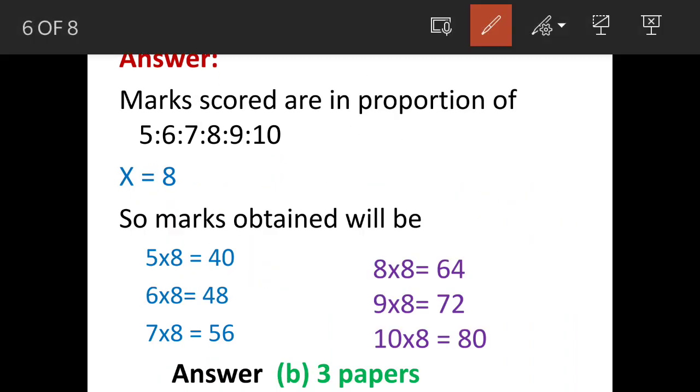Now we have obtained value of X as 8, which stands for score in individual papers. So individual paper scores are in this proportion. So now each proportion multiply by X.